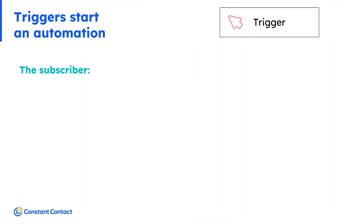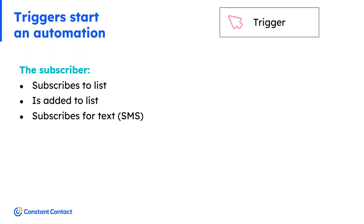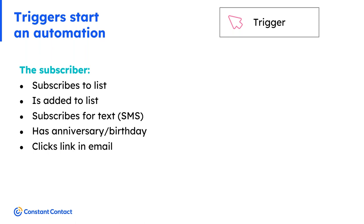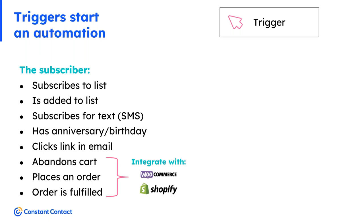Any automation is kicked off by what we call a trigger — a behavior or action that you or your subscriber takes to trigger the workflow of emails or text communications. In your account, automation can start when subscribers join a list through a sign-up form, are added to a specific list, subscribe to SMS text messages, have an upcoming birthday or anniversary, click a link in an email, or — for e-commerce — abandon their cart, place an order, or have their order fulfilled.